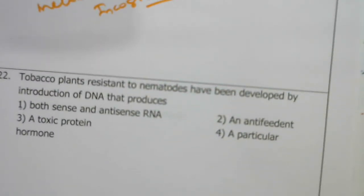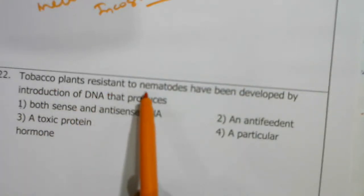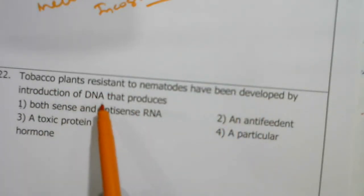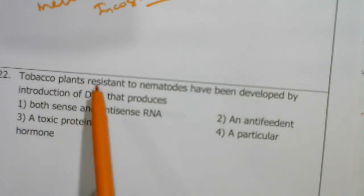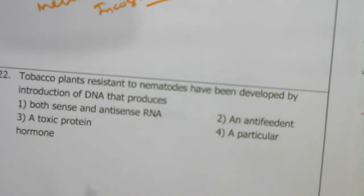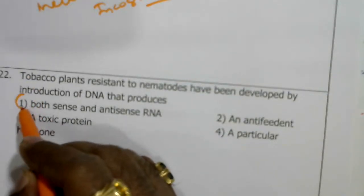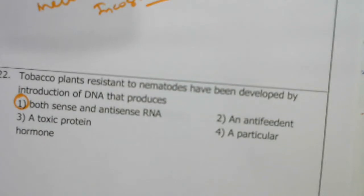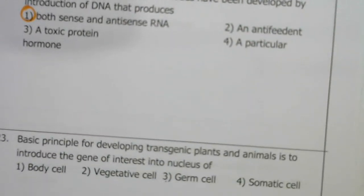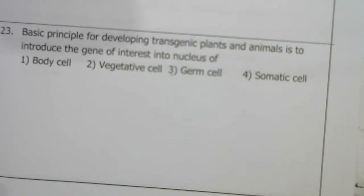Tobacco plants resistant to nematodes have been developed by introduction of DNA that produces RNA interference. A particular structure — activated RISC — binds with the mRNA of the nematode and prevents its translation.